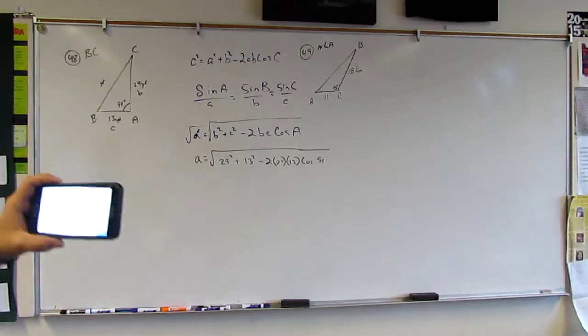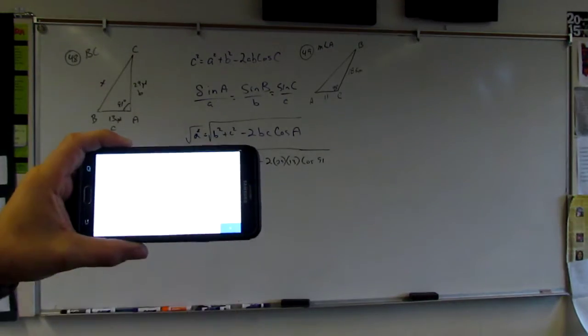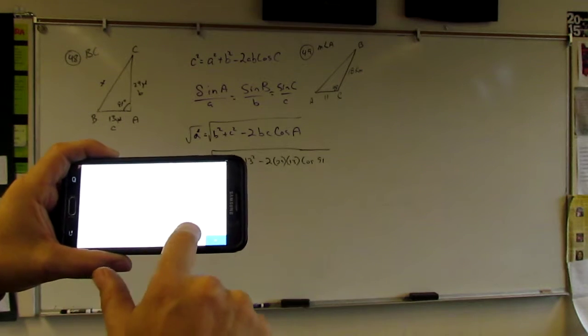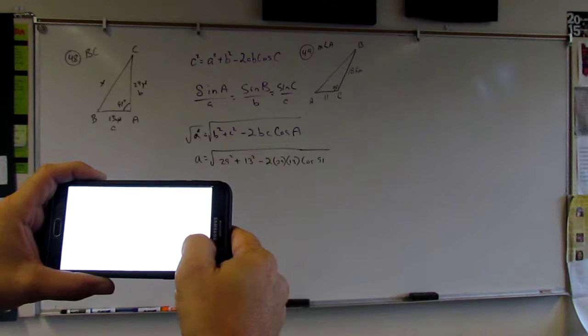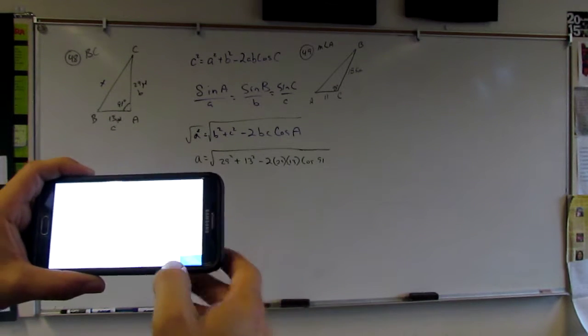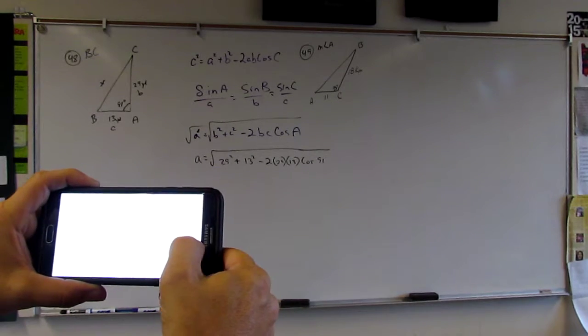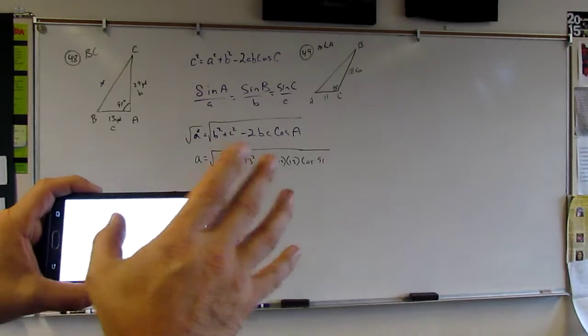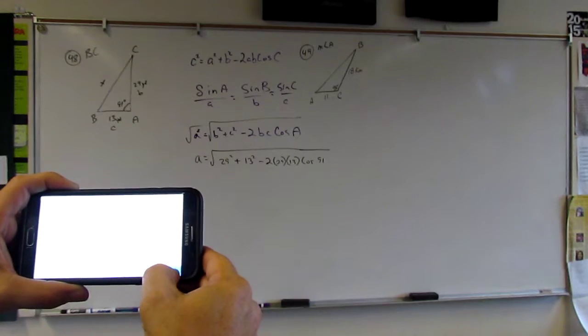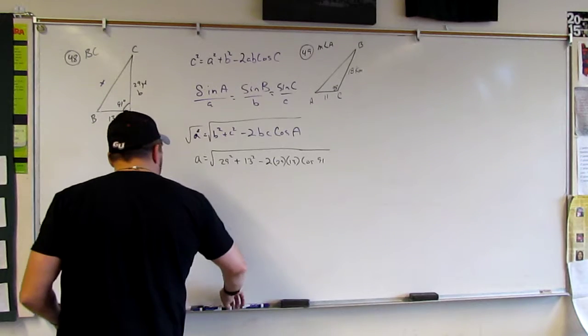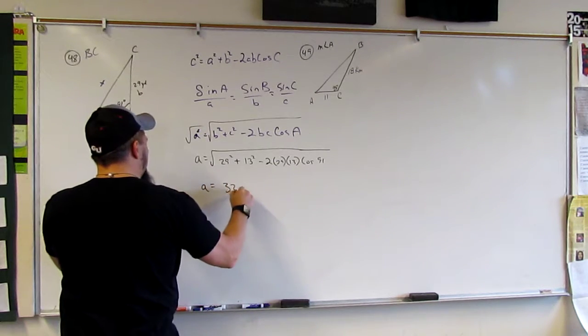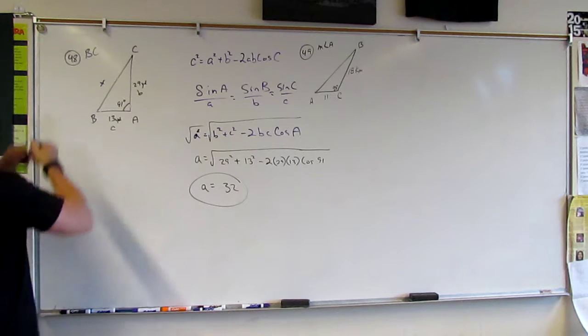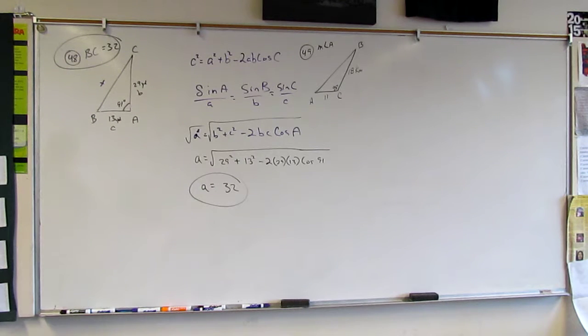And then I just plug that in my calculator. So, turn it sideways, start with nothing, right? And then I say square root of 29 squared plus 13 squared minus 2 times 29 times 13 times cosine of 91, and it equals. And that's 31.98, so what I'm coming up with is A is equal to 32. And that's what this is, so 32.